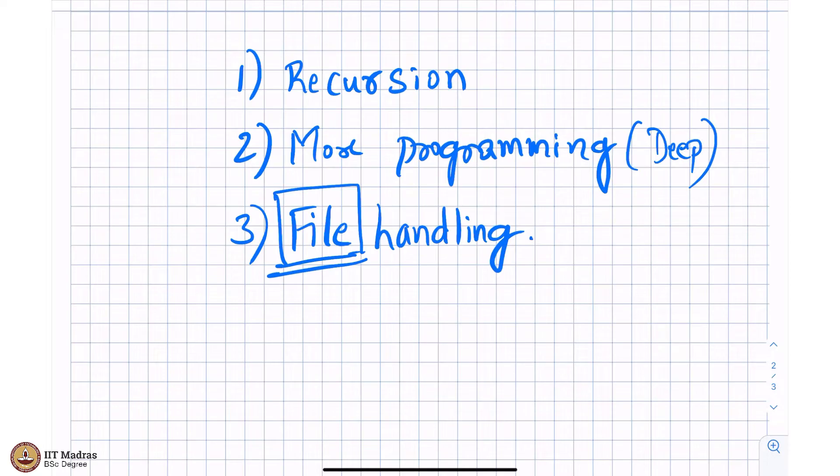You cannot go beyond a limit but with files on your hard disk, you see you store a movie on your hard disk. You store all your mp3 songs on your hard disk. So, you can also store big files on your hard disk and how do you access them and how do you make sense out of it. So, that is what we will be discussing in file handling.